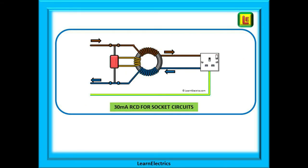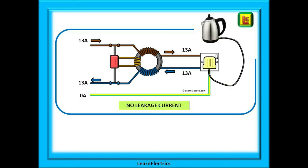Let us now look at this with our RCD coil drawing. Here is the RCD connected in a socket circuit. We have shown only one socket and one circuit for simplicity, but in practice we will have several circuits attached to one RCD, and we've also left off any circuit breakers or fuses. We have the live in, the neutral out, and also the circuit protective conductor or earth coming out. When we plug in our kettle, 13 amps flows along the incoming line through the coil wrapped around the ferromagnetic core and into the kettle. This is a new kettle with no leakage, so 13 amps flows back along the neutral wire around the core and out. The sensing coil detects no difference and does nothing.